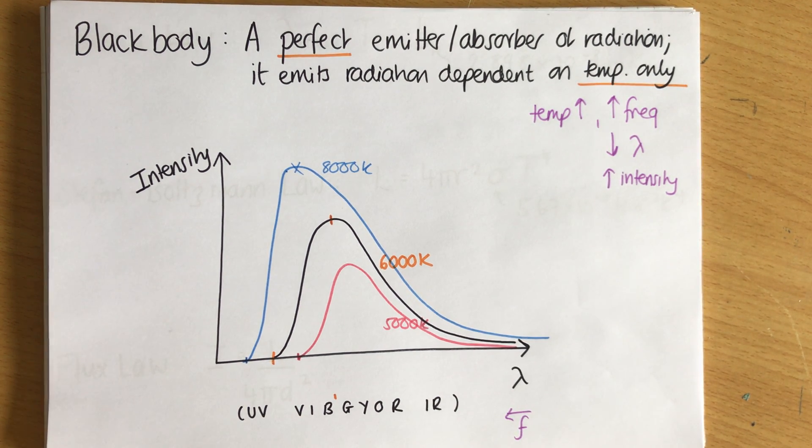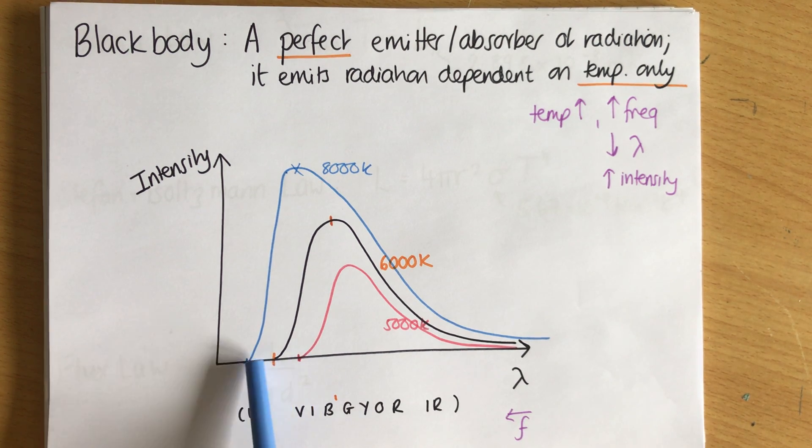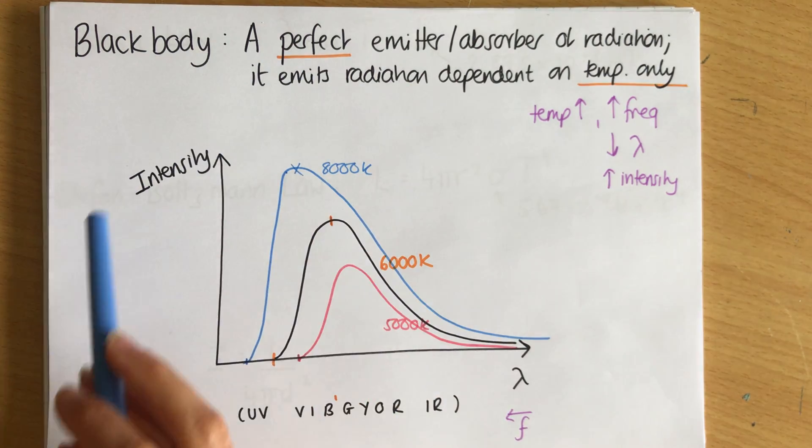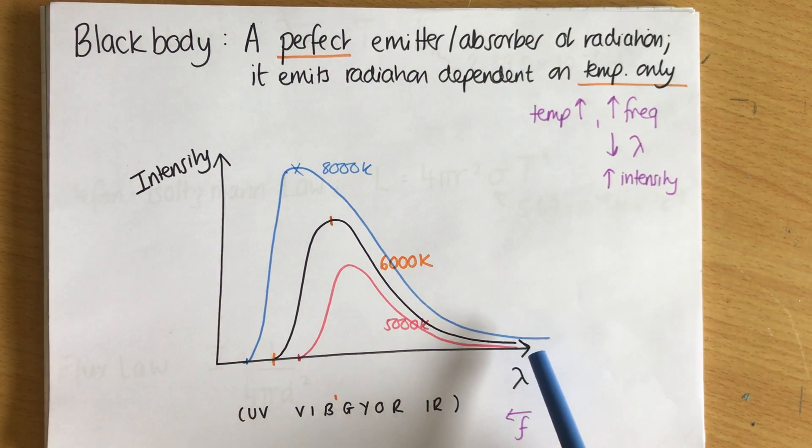So this graph, this black body curve, you need to know how to draw or sketch versions for hotter and colder stars. So make sure you know about the start point, where the peak would be, so the peak will always be higher and further over this way, the hotter the star gets, and then it shouldn't hit the x-axis here, because it's still emitting these other wavelengths.